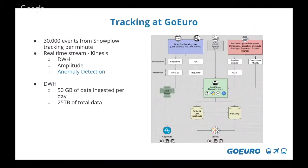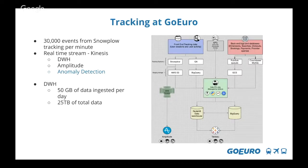The way we do tracking at GoEuro is we have two tracking systems: Snowplow and Google Analytics. We began with Google Analytics and are slowly moving over to Snowplow completely. The reason we haven't moved over completely yet is because there are still some dependencies on Google Analytics. The data from Snowplow goes to S3, we have daily jobs pushing it into the data warehouse, and the real-time stream goes through AWS Kinesis to Amplitude and also to the anomaly detection system.